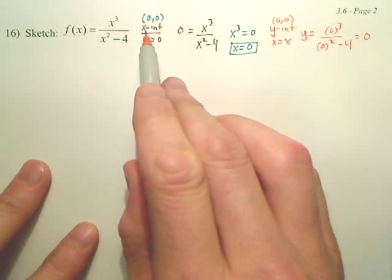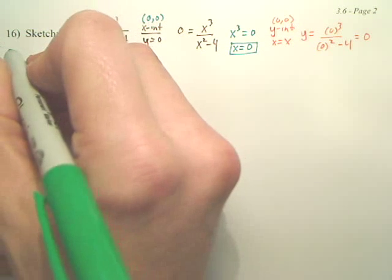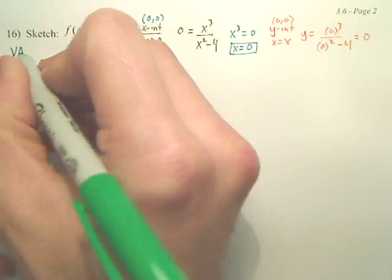The only x and y intercepts are (0, 0). It's the same for both. That's nice. Let's focus next on asymptotes. Let's talk about vertical asymptotes. It's the easiest one.